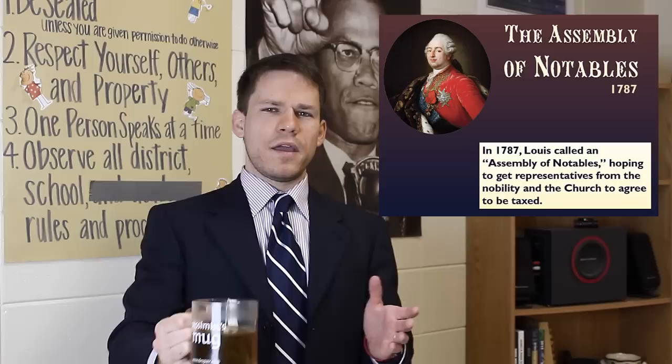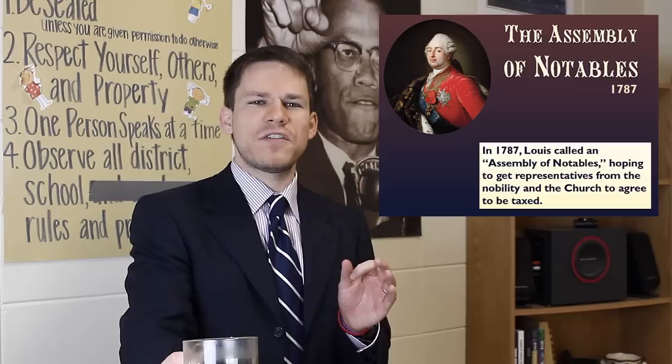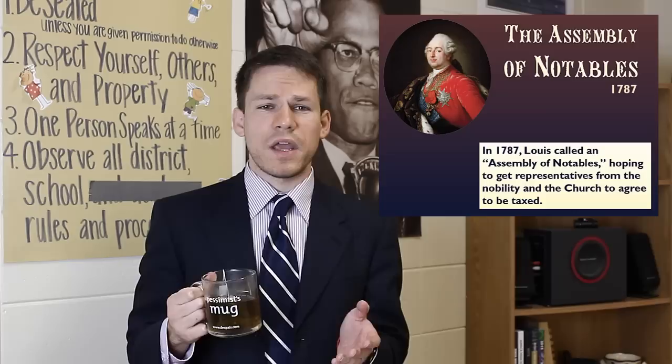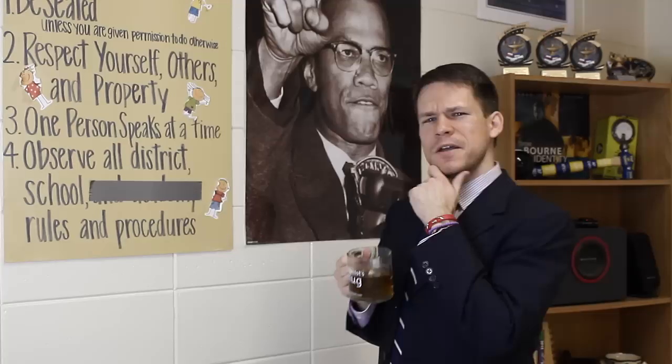Louis cannot tax the nobles by decree — Louis instead has to beg. So in 1787 he calls an assembly of notables, who are representatives of the tax-exempt classes: representatives of the church hierarchy and of the nobility. Louis wants to ask: would you mind if I start taxing you? And this is basically a failure.